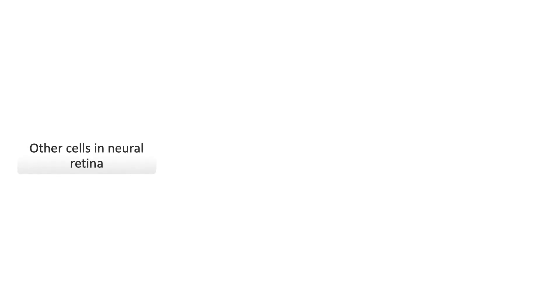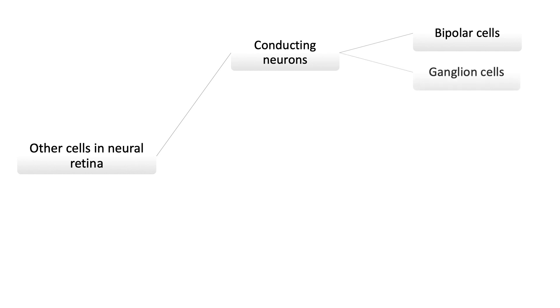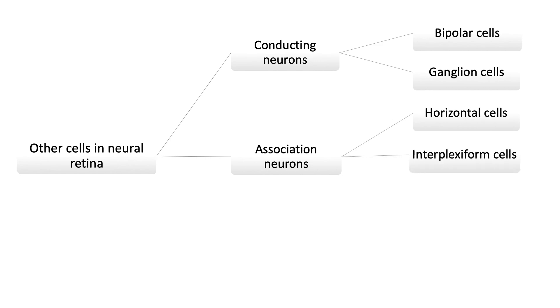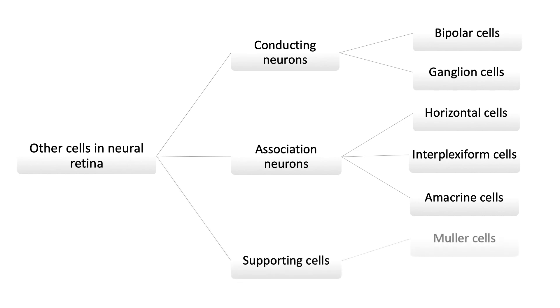In addition to rods and cones, there are many other cell types in the neural retina. Conducting neurons include bipolar neurons, which transmit information from photoreceptors to ganglion cells, and ganglion cells, which are multipolar neurons carrying information from the retina to the central nervous system through the optic nerve. Association neurons include horizontal cells and interplexiform cells, with processes in the outer plexiform layer, and amacrine cells, with processes in the inner plexiform layer. Supporting cells include Müller cells, which form the scaffold of the retina and stretch across the inner eight layers, with apical processes forming the outer limiting membrane and foot plates forming the inner limiting membrane. A few astrocytes and microglia are also found in the layer of optic nerve fibers.